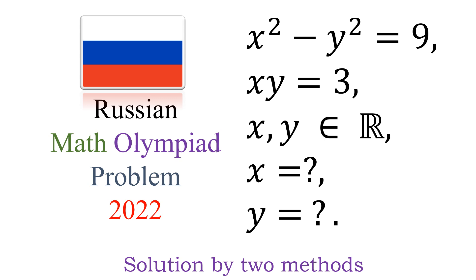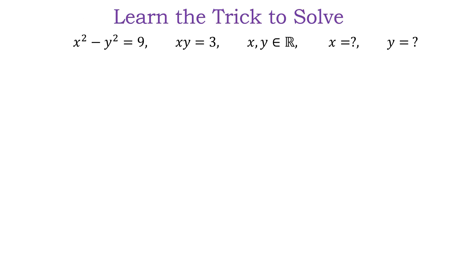Welcome back to my YouTube channel. In today's video we are going to solve this question. The question is: if x squared minus y squared is equal to 9, and xy is equal to 3, where x and y belong to the real numbers, we need to find the value of x and the value of y. Let's begin to solve the question.